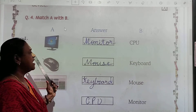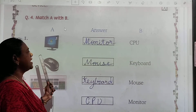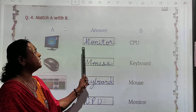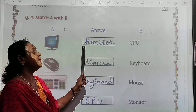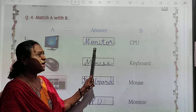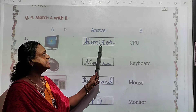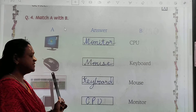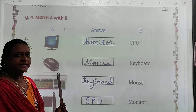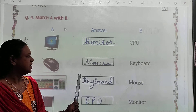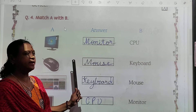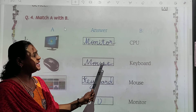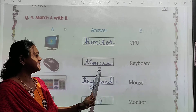Now what is this, children? Aap ko pata hai ye kya hai? Monitor. Toh hume yahan monitor ki spelling likhenge: M-O-N-I-T-O-R. Now what is this? Yes — mouse. Ab hume yahan mouse ki spelling likhenge: M-O-U-S-E.